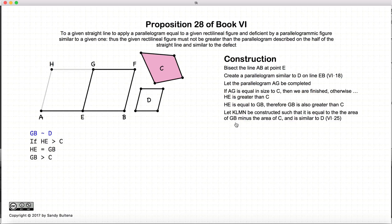Now, here we're stating, let KLMN be constructed such that it is equal to the area of GB minus the area of C, and is similar to D. And we're to use proposition 25 of book 6 to do this. Now, this is all that it said in the book that I'm using, but I didn't find it explained all the steps necessary, so I'm going to sort of go outside of the reference material and explain a little more. Hence the question marks.